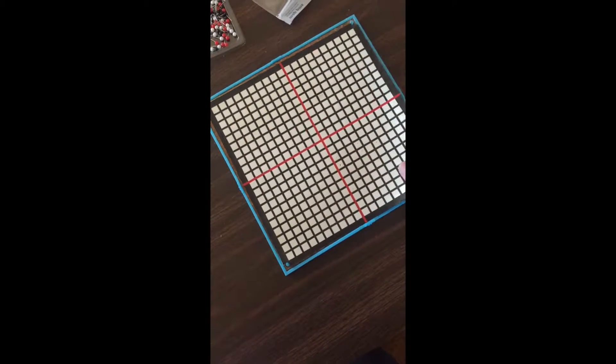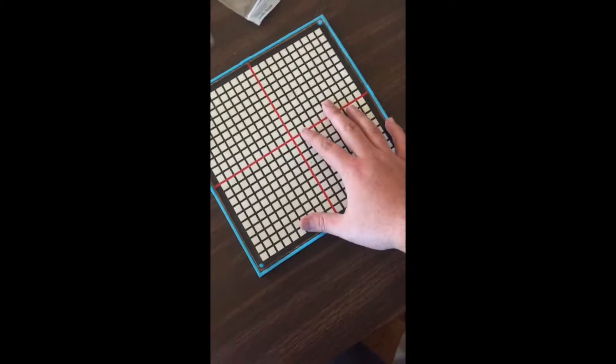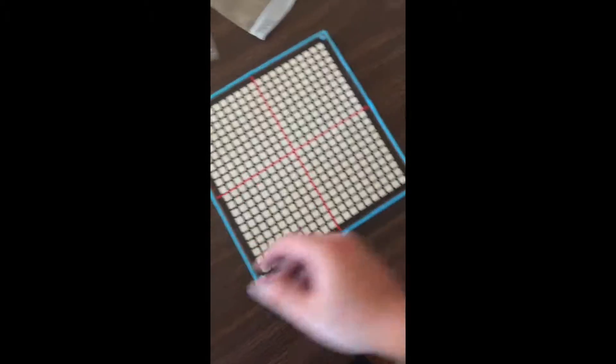Next there is a thinner square that fits on top with the help of four circle cutouts that correspond with four small columns on the base.